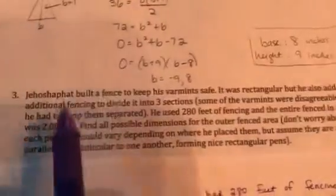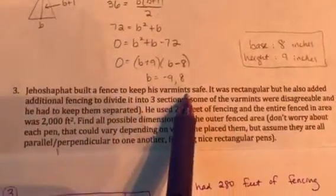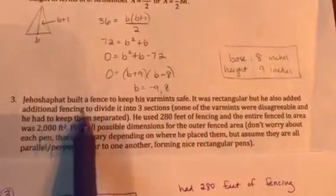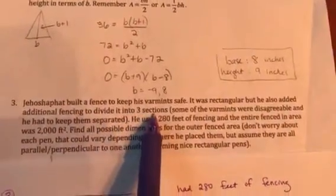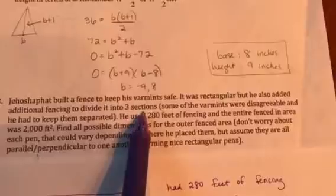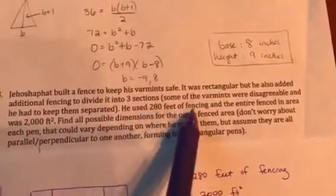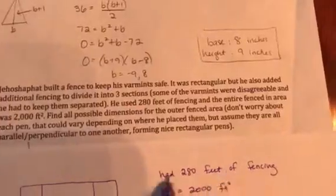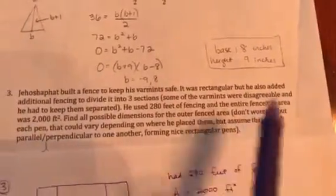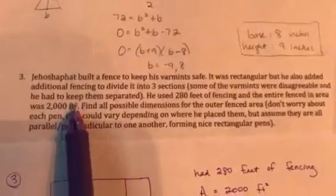So it says, Jehoshaphat built a fence to keep his varmints safe. It was rectangular, but he also added additional fencing to divide it into three sections. Some of the varmints were disagreeable and he had to keep them separated. He used 280 feet of fencing, so I wrote myself this little note so I didn't forget. And the entire fenced-in area was 2,000 square feet.